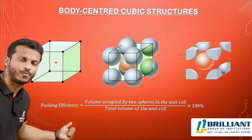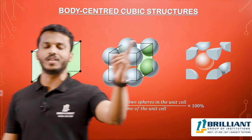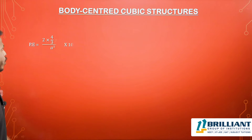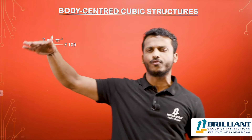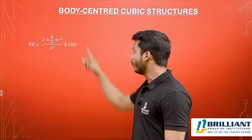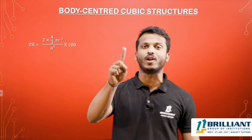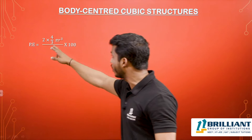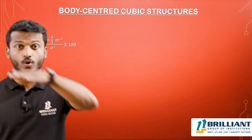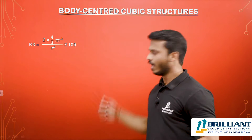Now let's go for the calculation. What is packing efficiency? It is the volume occupied by the spheres in the unit cell divided by the total volume of the unit cell, multiplied by 100. So packing efficiency equals 2 × (4/3)πr³ in the numerator — that is the total volume of two spheres, since the volume of one sphere is (4/3)πr³ and there are two spheres — divided by a³, which is the total volume of the unit cell (a cube), multiplied by 100.